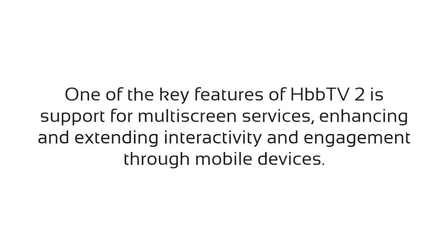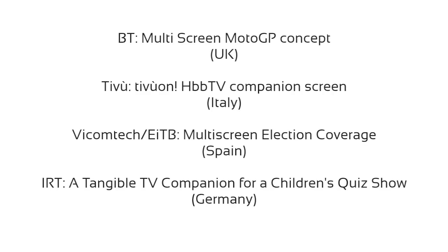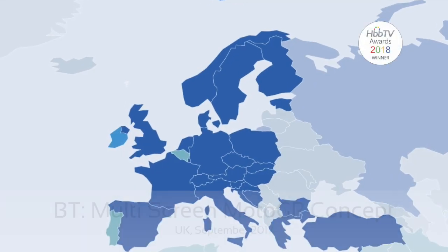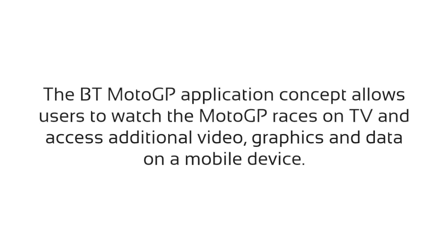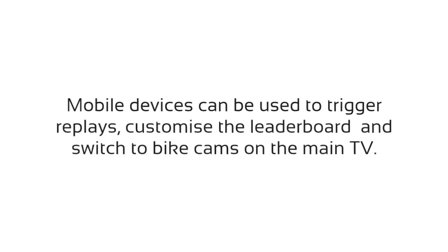One of the key features of HBB TV2 is support for multi-screen services, enhancing and extending interactivity and engagement through mobile devices. The BT MotoGP application concept allows users to watch the MotoGP races on TV and access additional video, graphics and data on a mobile device. Mobile devices can be used to trigger replays, customise the leaderboard and switch to bike cams on the main TV.